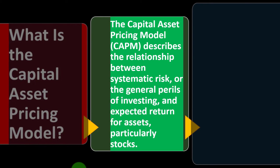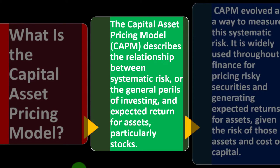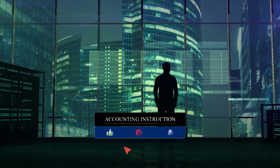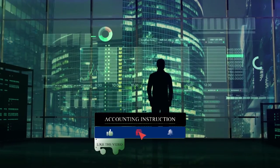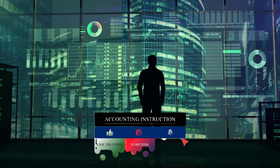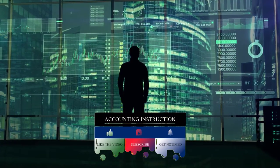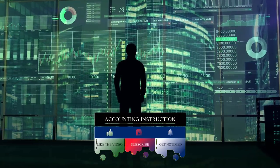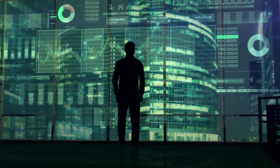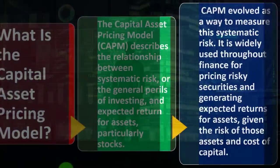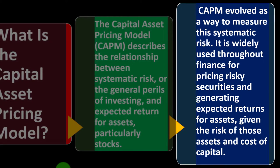The Capital Asset Pricing Model describes the relationship between systematic risk — the general perils of investing — and expected returns for assets, particularly stocks. We are generally focused on the equity side of things, taking into consideration systematic risk and the perils of investing within our investment decisions, as well as comparing that to expected future returns.